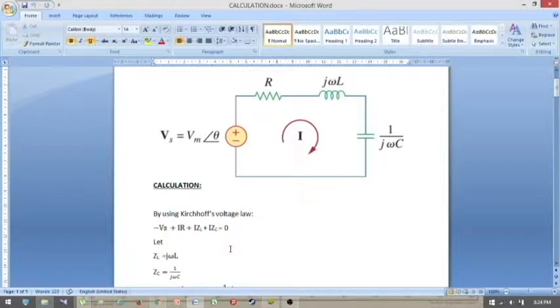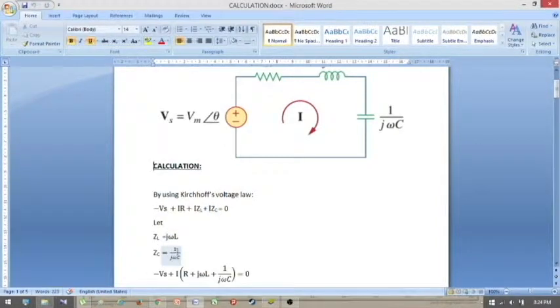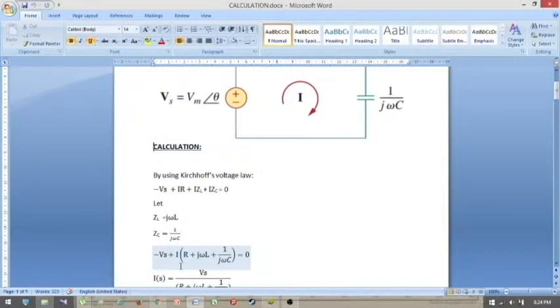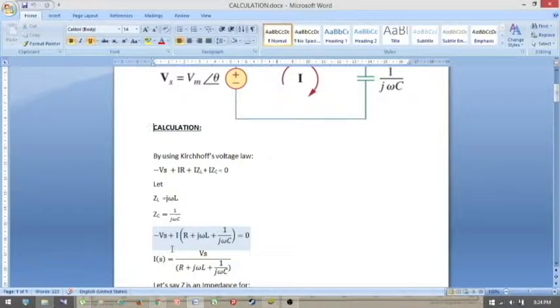For the calculation, we're gonna use Kirchhoff's voltage law: negative VS plus IR plus IZL plus IZC equals to 0. Let ZL equals to J omega L and ZC equals to 1 over J omega C. So, negative VS plus I in bracket R plus J omega L plus 1 over J omega C equals to 0.